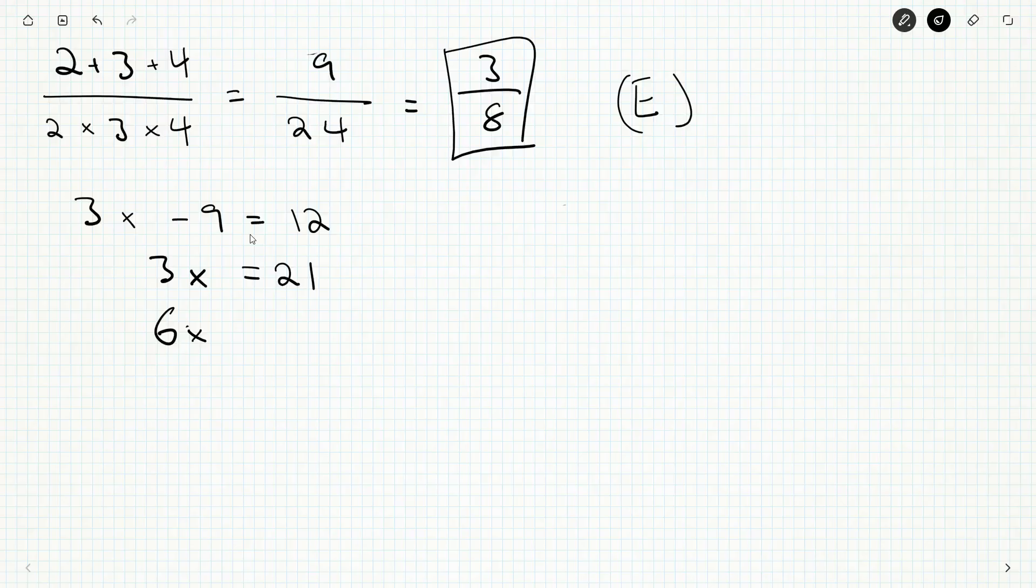And if I have 3x, I just need to double it, and I can get 6x. Doubling 21 is 42. Well, that's the answer we just had, but now we've got it with slightly less calculation.